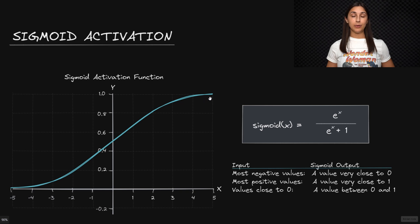So the closer to one the output is, the more activated that node is, and the closer to zero the output is, the less activated that node is.